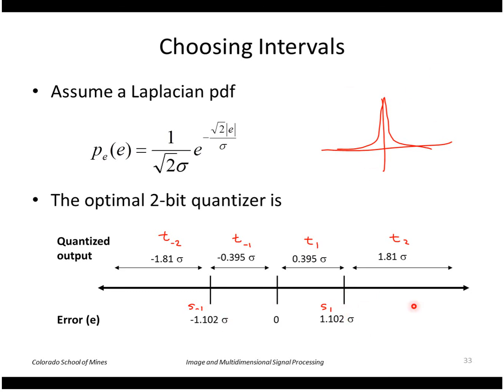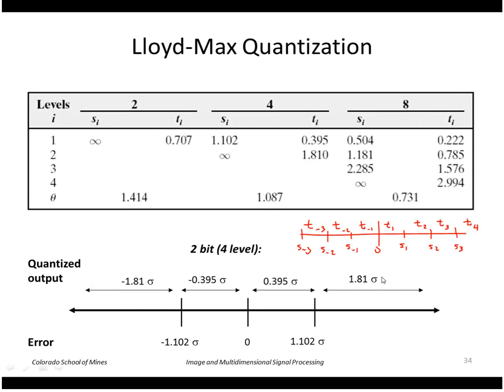Anything above 1.102, even out to infinity, gets assigned to the output value 1.81. And you can do this for a variable number of bits. We chose the case of four levels or two bits. If we wanted eight levels or three bits, we would actually have eight intervals as shown here. So we can do even better than that straightforward dividing by a constant factor.